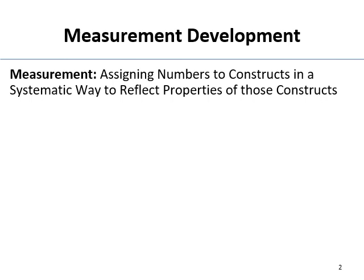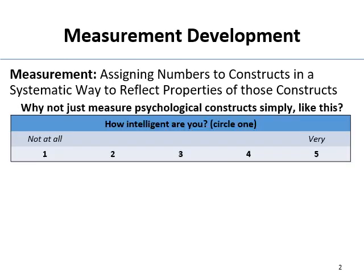What is measurement? A reminder from last semester: measurement is the process of assigning numbers to constructs in some systematic way that reflects the properties of that construct. For example, assigning pounds to the construct of weight, or inches to length — same idea.